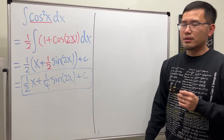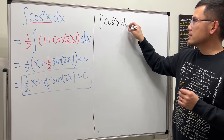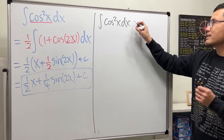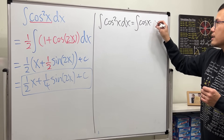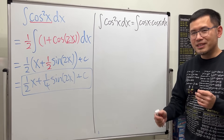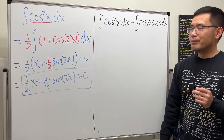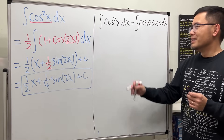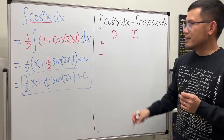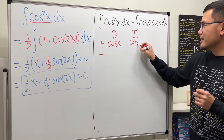Now here is how we can work this out with integration by parts. We have the integral of cosine squared x dx. Let me break this down into cosine x times cosine x. For integration by parts we want to pick one part to differentiate and the other to integrate. Both parts are cosine — so we differentiate one cosine and integrate the other.